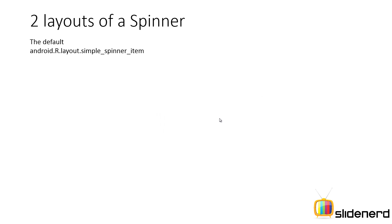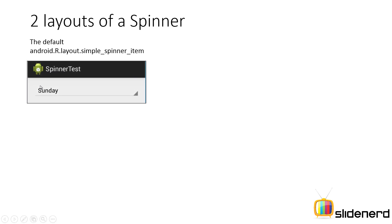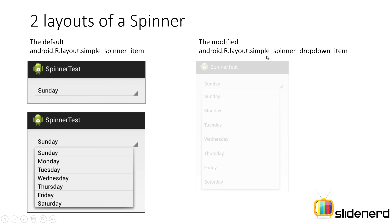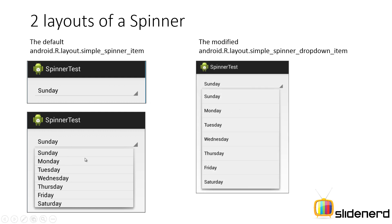Now let me examine the layouts of a spinner. The first one is android.R.layout.simple_spinner_item — this is the default look when expanded. The other one is android.R.layout.simple_spinner_dropdown_item, which differs in that it has better margin spacing and uses a CheckedTextView instead of a normal TextView.